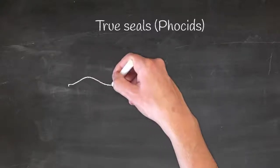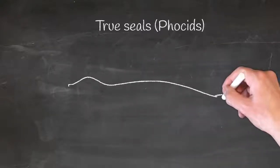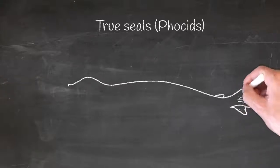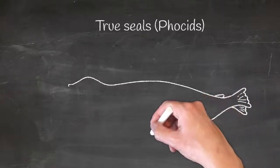Seals are part of the family Phocidae, also called true seals. Generally, seals are smaller in size and less vocal on land than sea lions, depending on the species, of course.